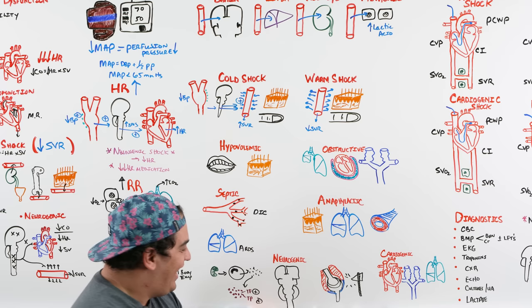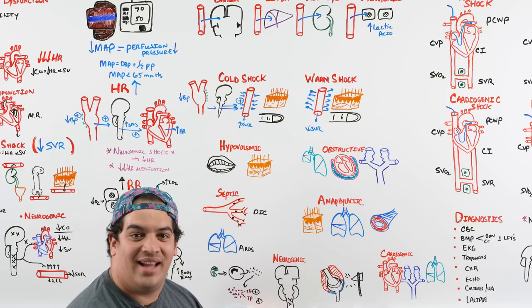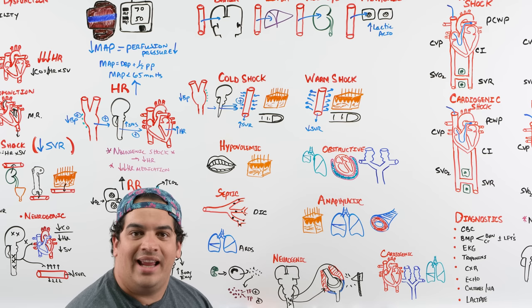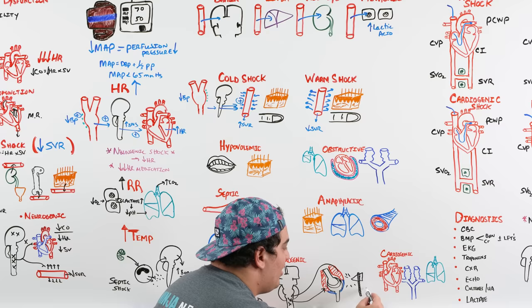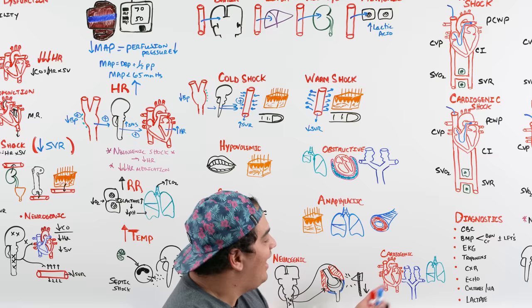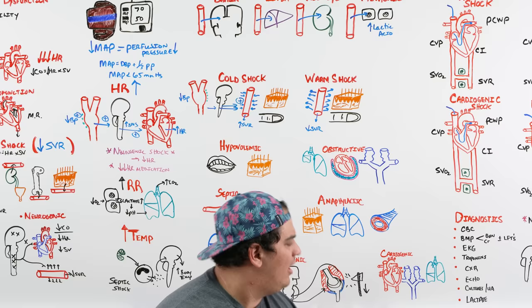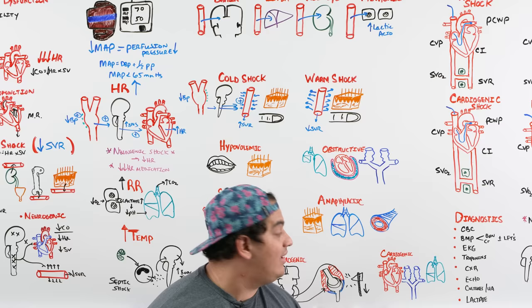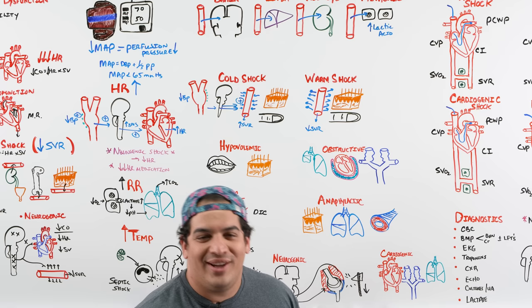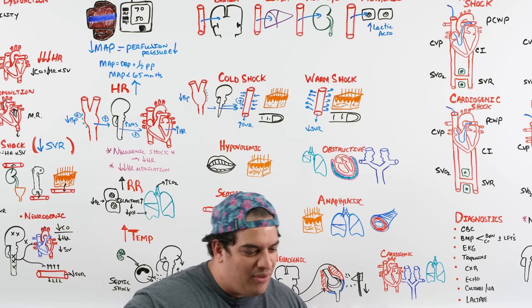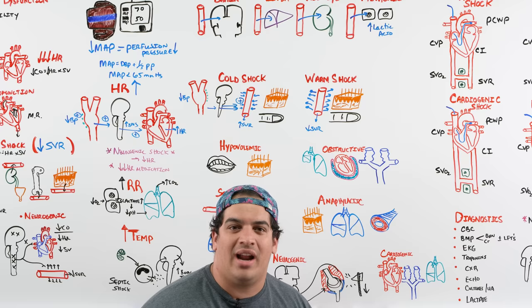In septic shock, watch for DIC — cytokines activate procoagulants like tissue factor, causing widespread microthrombi and consumption of clotting factors and platelets, leading to paradoxical bleeding. Massive pulmonary inflammation can cause ARDS. In anaphylactic shock, look for hives, wheezing, bronchospasm, or stridor. In neurogenic shock, deep tendon reflexes will be decreased or absent. In cardiogenic shock, look for chest pain (MI), JVD, lower extremity edema, or pulmonary edema.